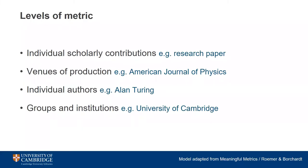Metrics are numerical surrogates for the impact and often the quality of research. They've been used for many years as the main method of assessing and ranking research, comparing the careers of individual academics or even justifying the existence of entire institutions. The model we're going to discuss is based on work by Romer and Borchardt to identify levels of metric and helps to demonstrate both the range available in academia and what they aim to measure.